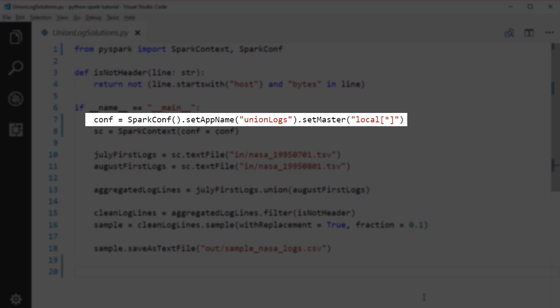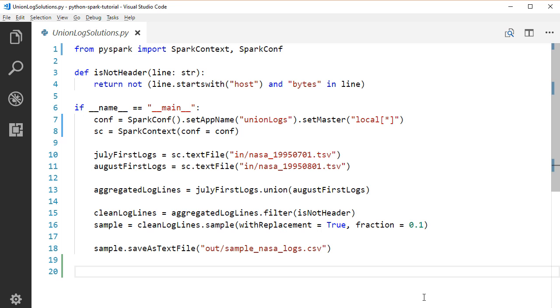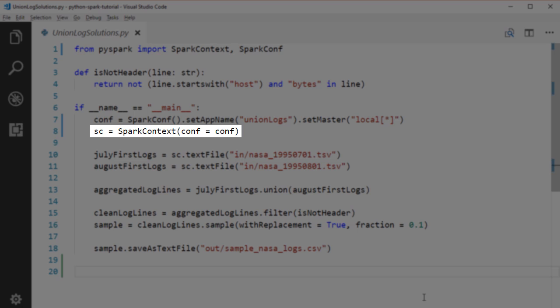First, we create a SparkConf object. In this program, we specify local star as the master URL, which basically means our Spark application will run all the available cores on our local CPU. Then, we create a SparkContext object from the SparkConf we created.